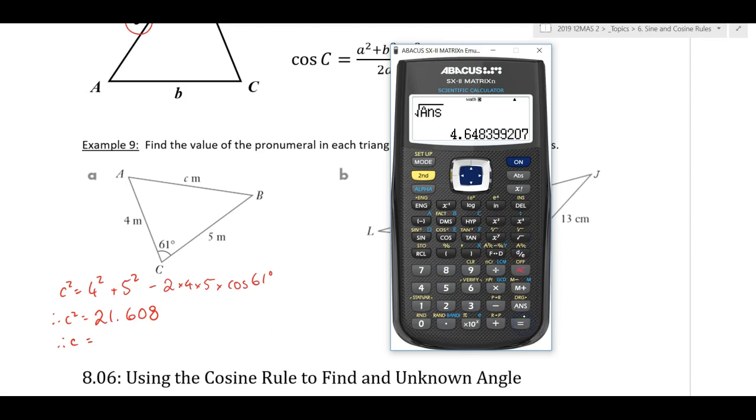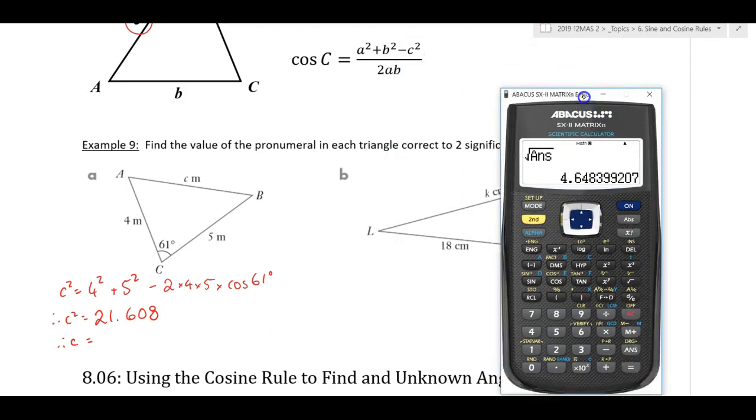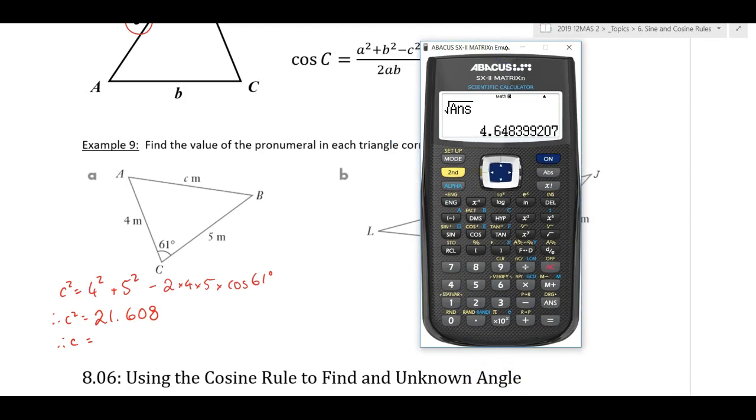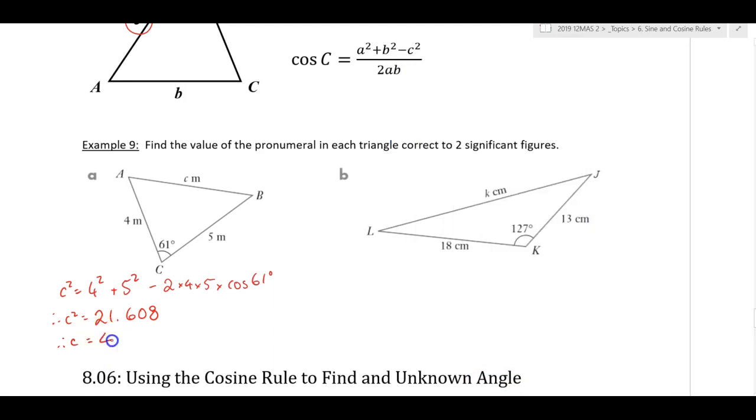So I've got to do the square root of that. Square root of my answer equals 4 point... Let's say two significant figures. 4.6. I don't need to say metres, because it's already there. Right here? Cosine rule. Let's try it again.